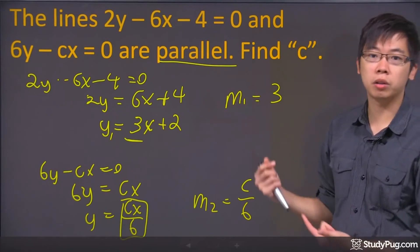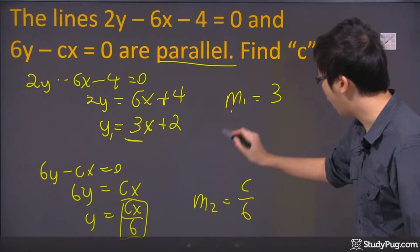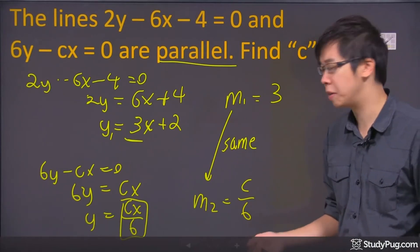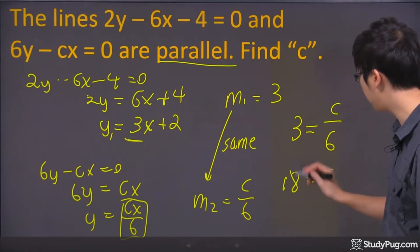Now, we know that they're parallel to each other. So if they're parallel to each other, the slope must be the same. So this guy and this guy must be the same or equal. So that means we have a brand new equation right here. 3 will equal to c over 6, and c will equal to 18.